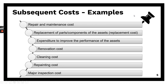What are examples of subsequent costs? Repair and maintenance — for example, for a building, elevator, or escalator. Replacement parts or components for machines or motor vehicles where the engine or certain components are being replaced. Expenditure incurred to improve the performance of the asset, improve the capacity of the asset, or improve the quality of the asset — for example, to improve a machine's capacity.